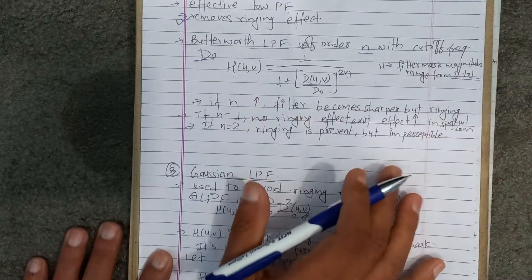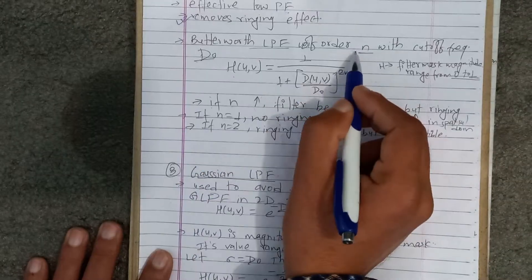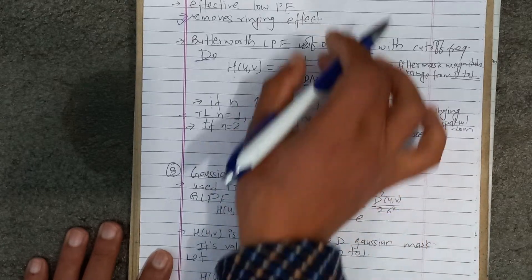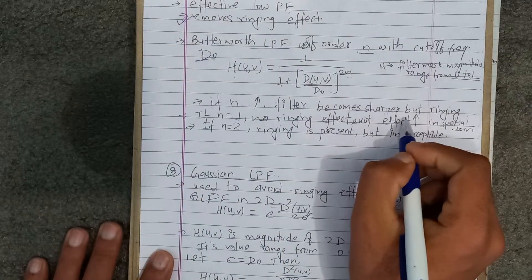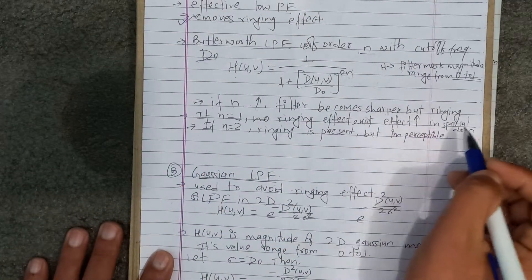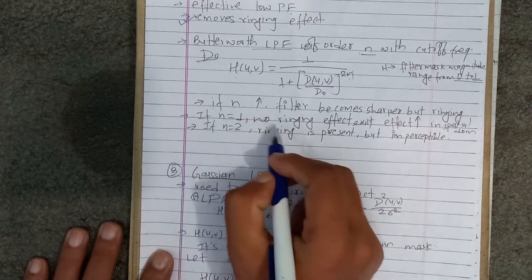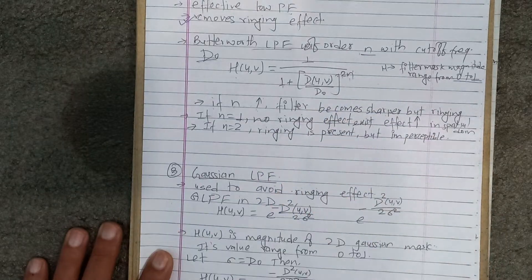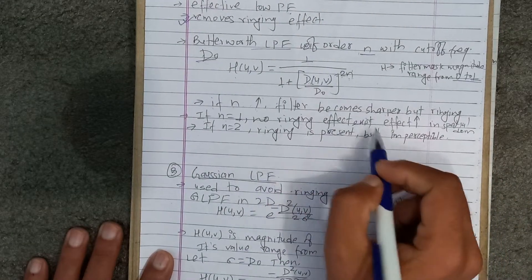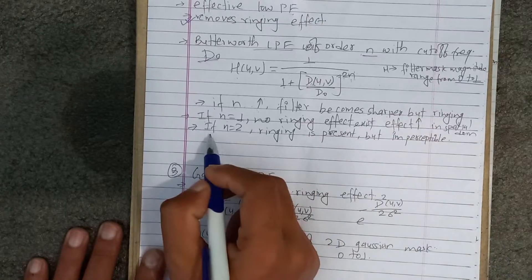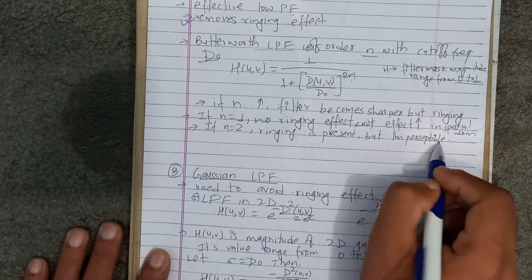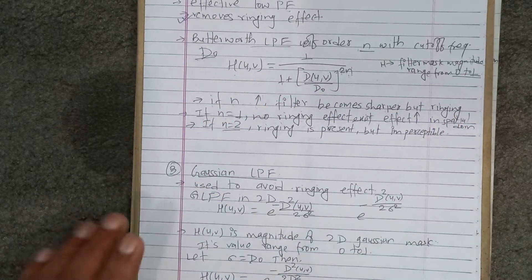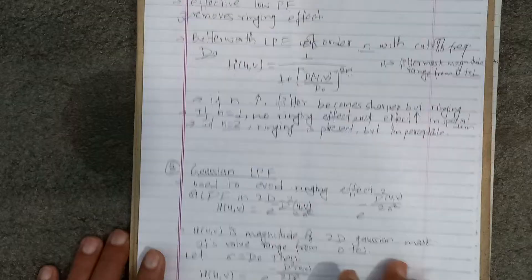That value sums to a matrix of a certain order. As the filter becomes sharper — if you want to raise it to a power, the value becomes less than 1, the filter becomes sharper but with a ringing effect. If the order is 1, there is no ringing effect. If it is squared (order 2), the ringing effect is more than imperceptible — it is perceptible, and you can see the ringing effect.